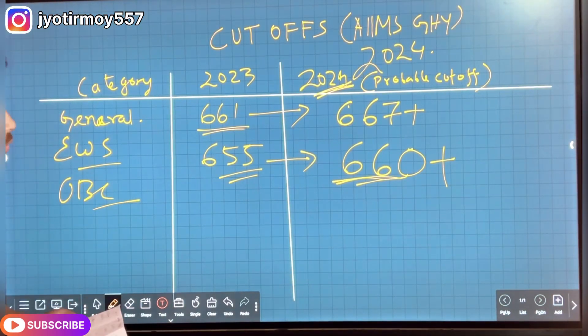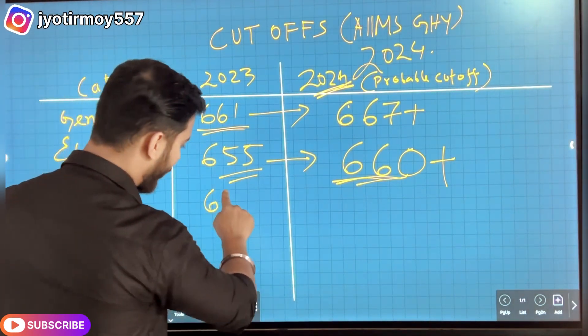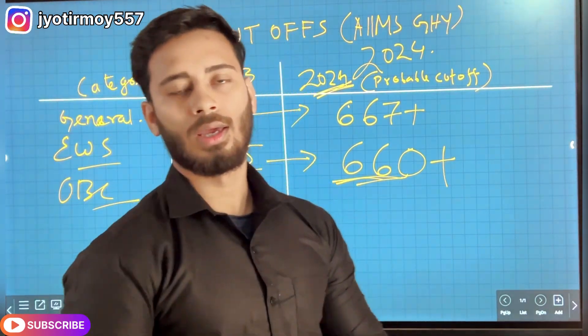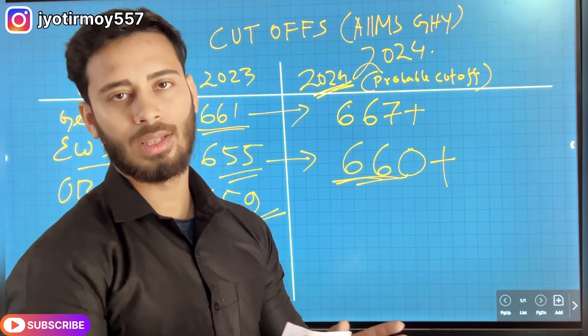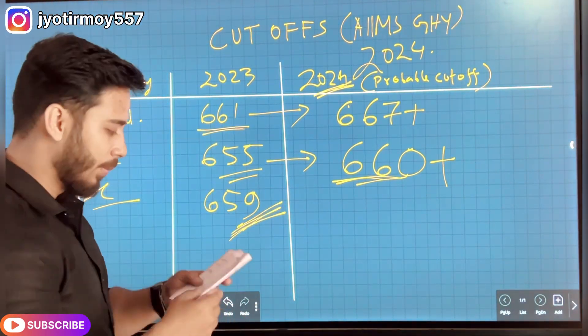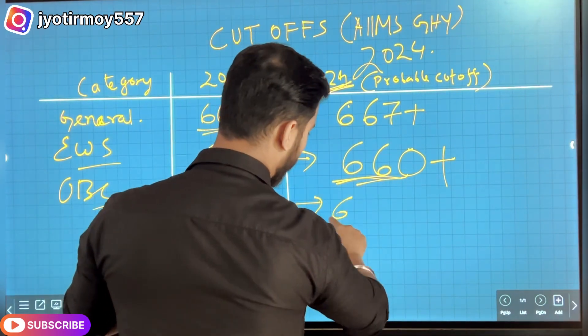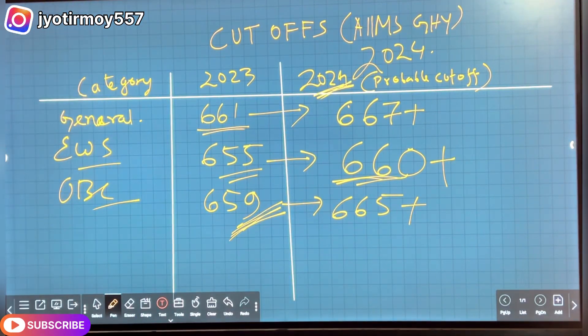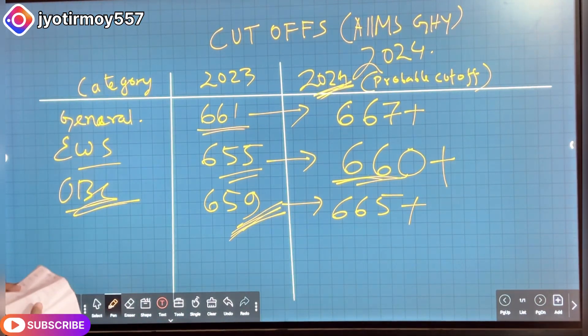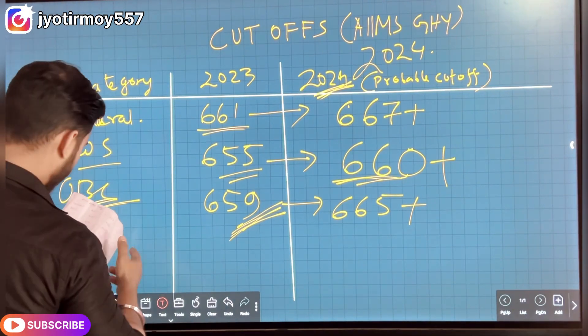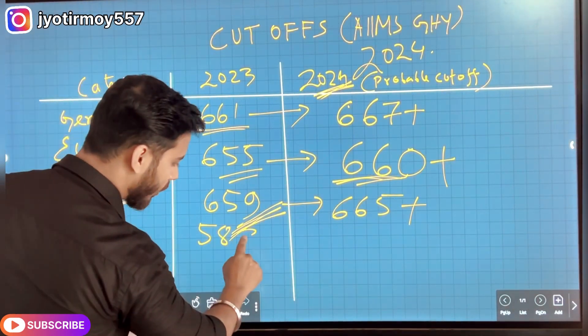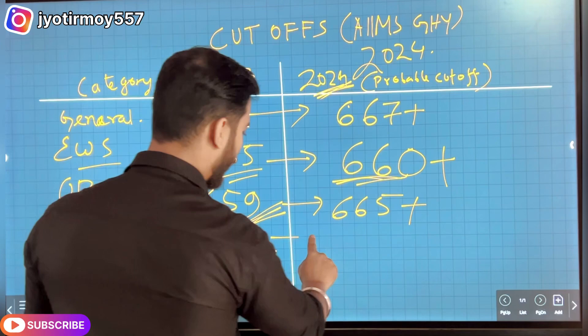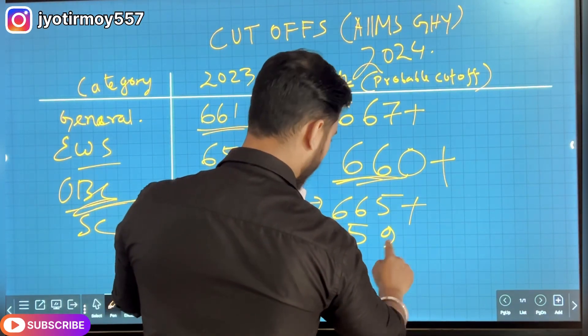The candidate who scored 659 was successful to get a seat in AIIMS. He or she was the last to get the seat. So the SC was the cutoff for 2023. The expected cutoff for SC will be 590 plus.